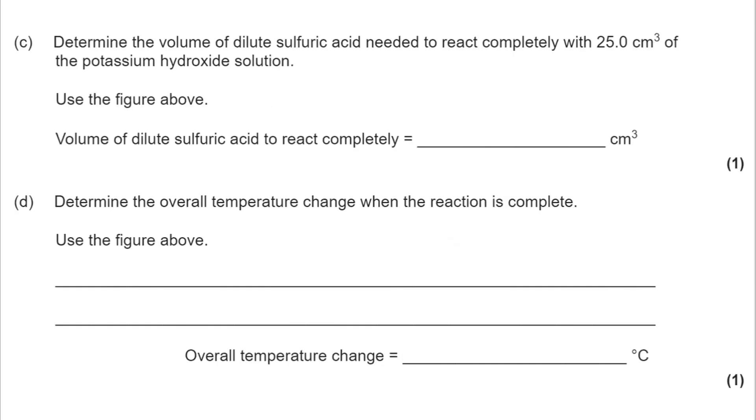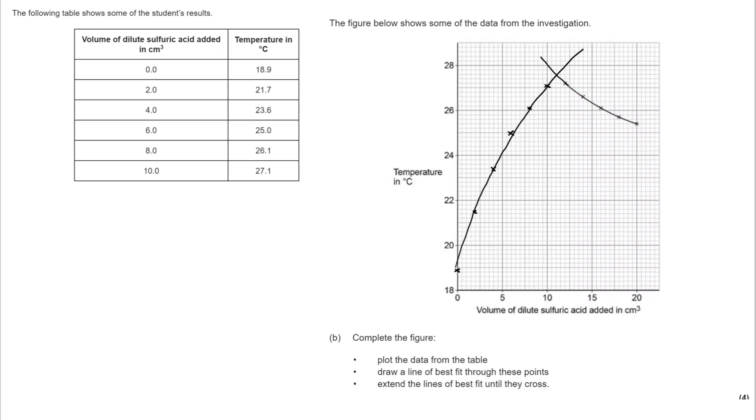Moving on to part C. Determine the volume of dilute sulfuric acid needed to react completely with 25 cm³ of potassium hydroxide solution. Use the figure above. So you're actually going back to your graph. This is looking at the point where the lines intercept. What we needed was 11 cm³, and you can go back in the video and look at that. In fact, I'll take you back now. You can see that if I go to here and go down, we are at 11 cm³.